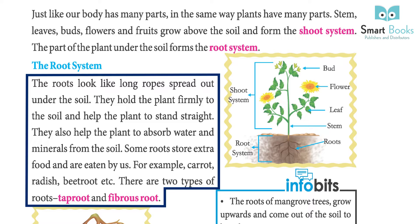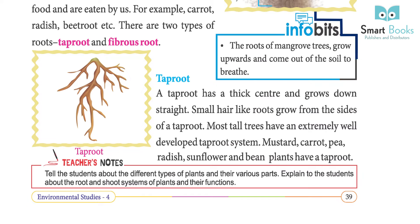Some roots store extra food and are eaten by us — for example, carrot, radish, and beetroot. There are two types of roots: taproot and fibrous roots. The roots of mangrove trees grow upward and come out of the soil to breathe.